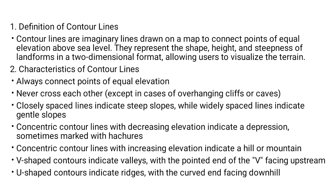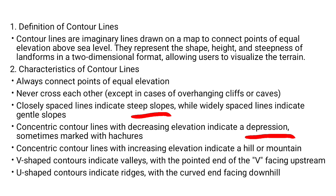3. Closely spaced contour lines indicate a steep slope, while widely spaced contour lines indicate gentle slopes. Concentric contour lines with decreasing elevation indicate a depression, sometimes marked with hachures. Concentric contour lines with increasing elevation indicate a hill or mountain. V-shaped contours indicate valleys, with the pointed end of the V facing upstream. U-shaped contour lines indicate ridges, with the curved end facing downhill.